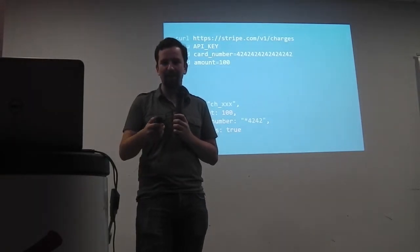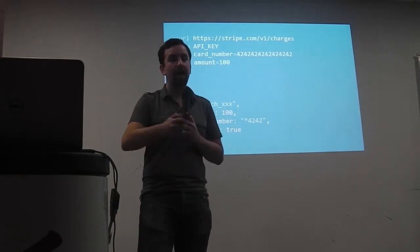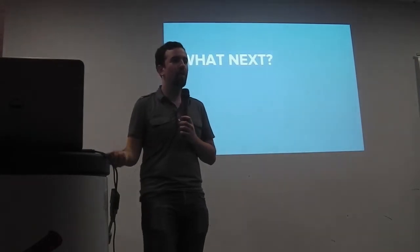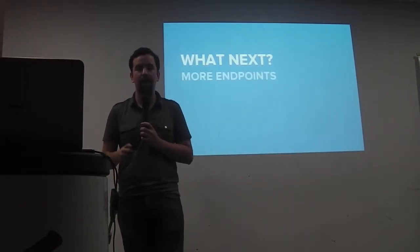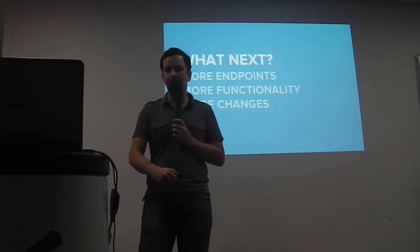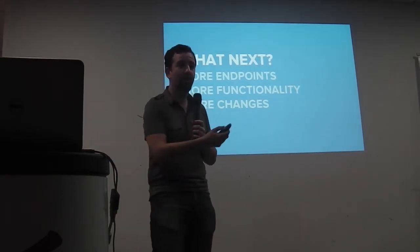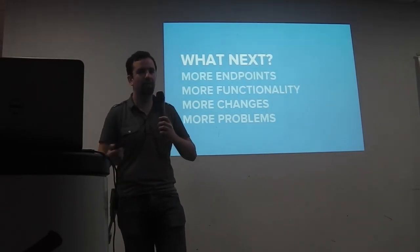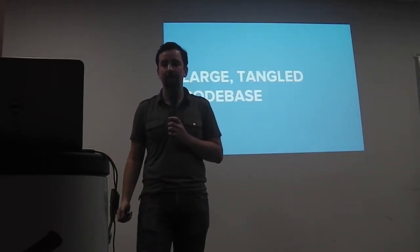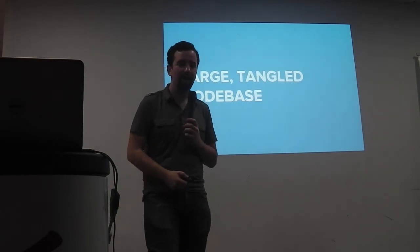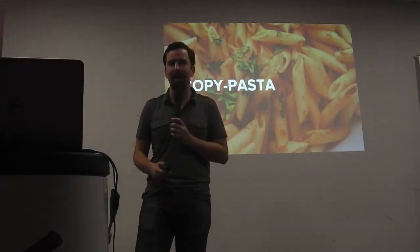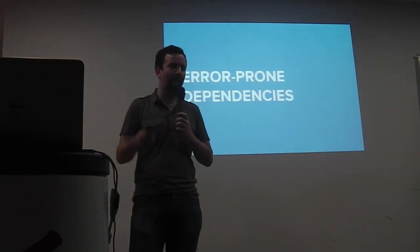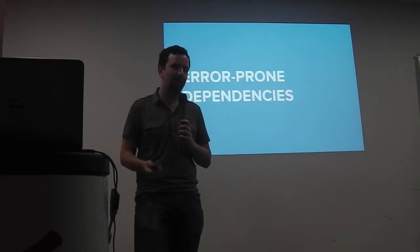You can kind of imagine trying to take this pattern of building all this and applying it to a lot of different places. We have our basic API, but where do we go from there? Logically, you want to add more endpoints, more functionality. You want to allow yourself to change, to evolve the API. And this all leads to more problems, because as you get a larger and larger code base, things get really messy. You get a large tangled code base. You find yourself copying and pasting code everywhere. And it just starts to become messy, with dependencies that conflict with each other.